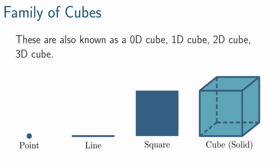Here's the family of cubes. The words you've probably learned are point, line, square, and cube. All of these shapes belong to the family of cubes, so we can also call them a 0D cube, 1D cube, 2D cube, and 3D cube.